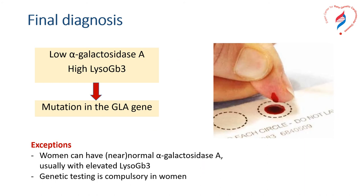Final diagnosis needs confirmation through both enzymatic and genetic testing. If low alpha-galactosidase A and high lyso-Gb3 are found, the disease must be confirmed by a mutation in the GLA gene. This is especially true for women, who can have normal or near-normal levels of alpha-galactosidase A, usually however with elevated lyso-Gb3. Therefore, genetic testing is compulsory for the disease.